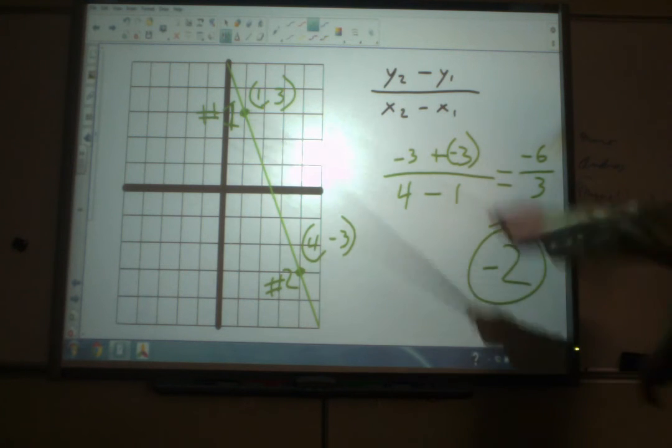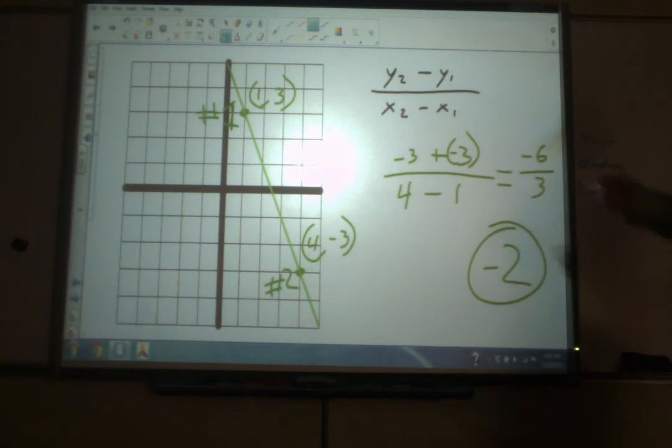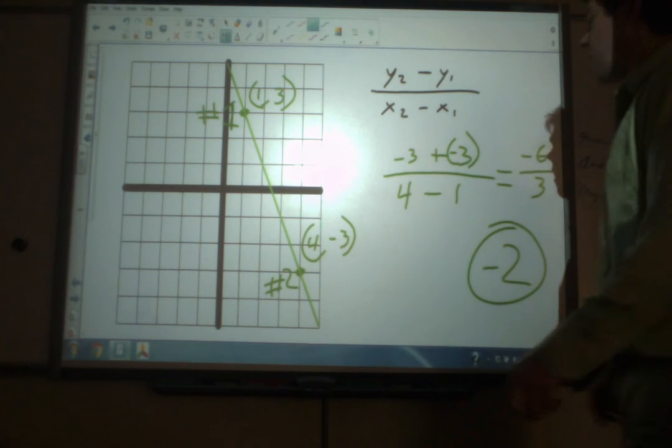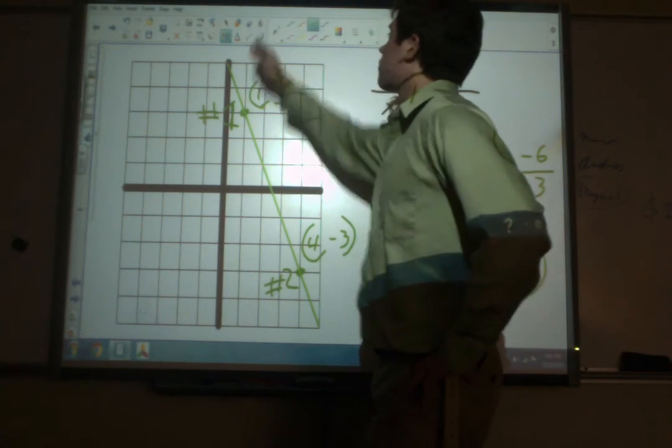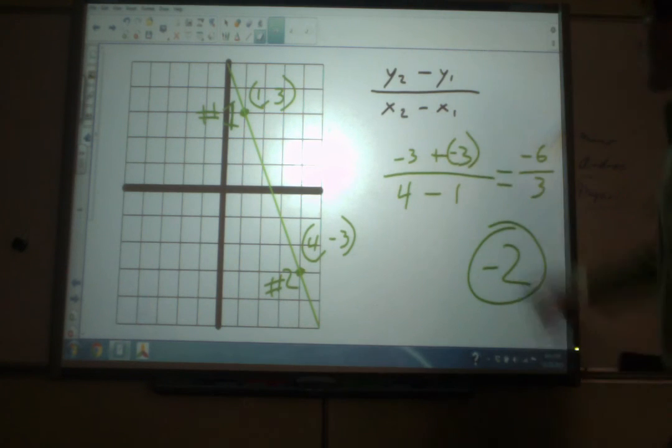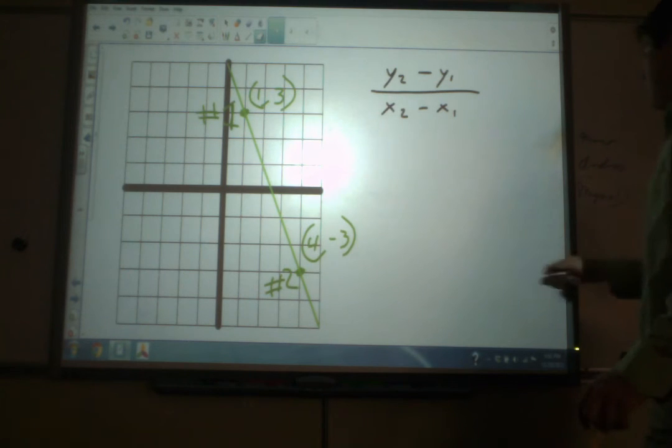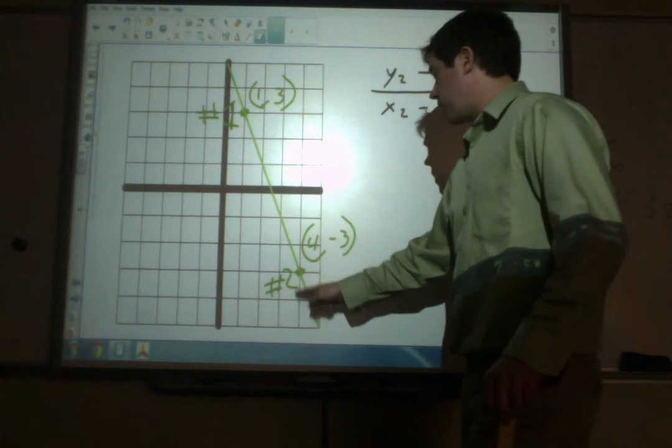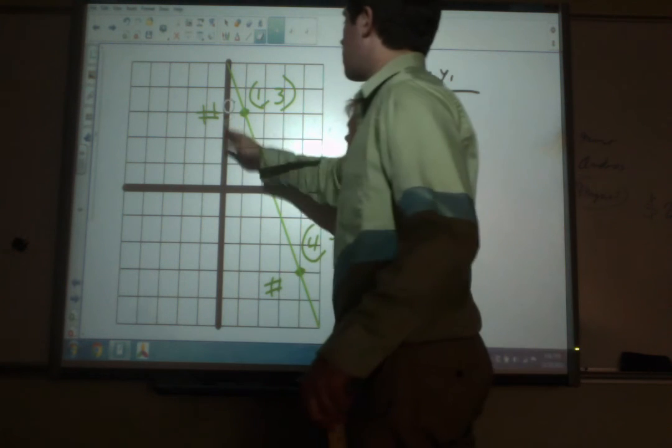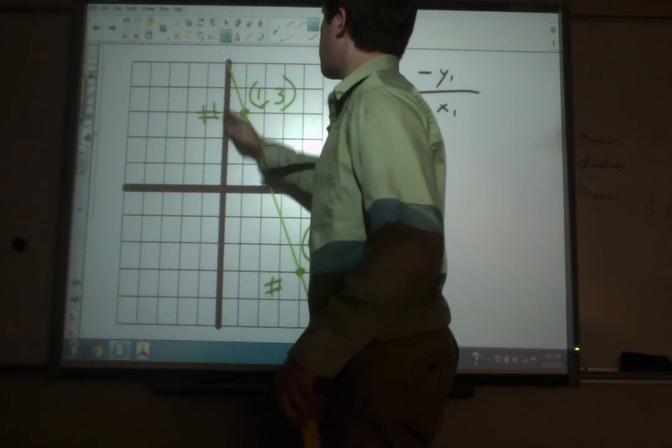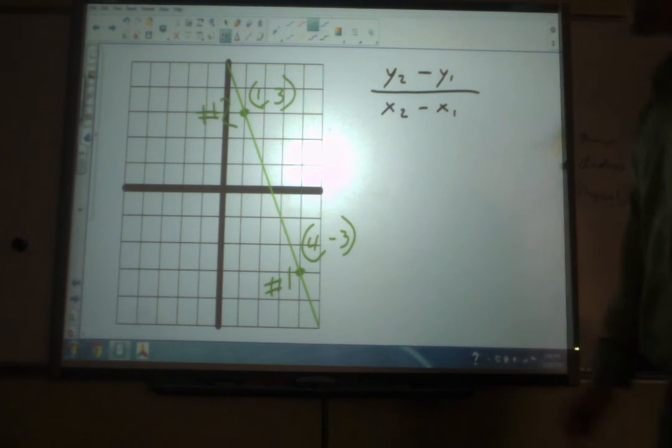So the slope of this particular line is negative 2. A question usually comes up sometime right about now in which people ask, how do you know which point is point number 1 and which point is point number 2? It's a good question. Let's take a look at that. I'm going to erase this. Keep in mind that our answer was negative 2. The slope was negative 2 here. And just for fun, we call this point 2 and this point 1. Let's switch them.